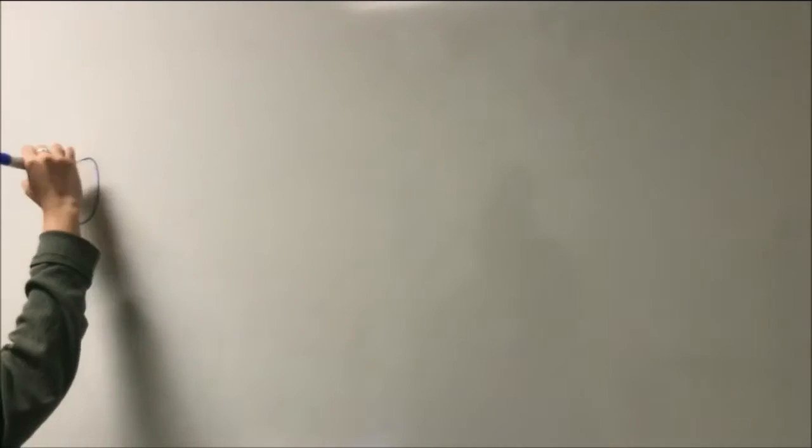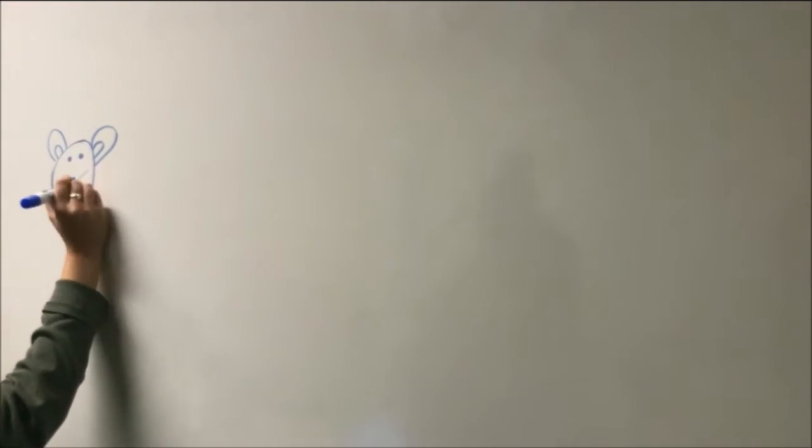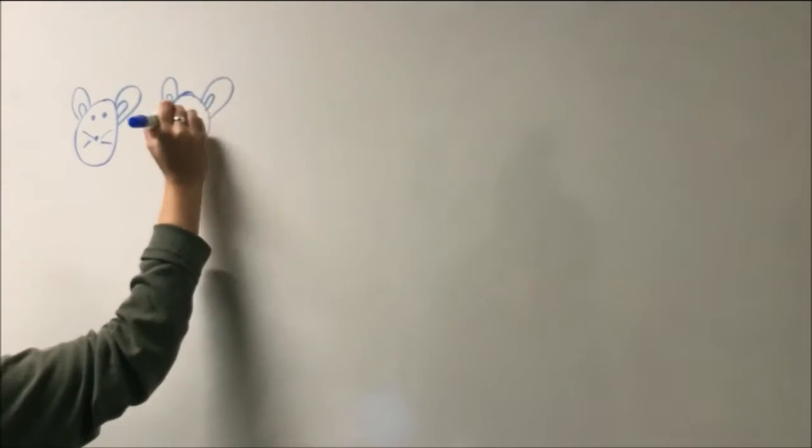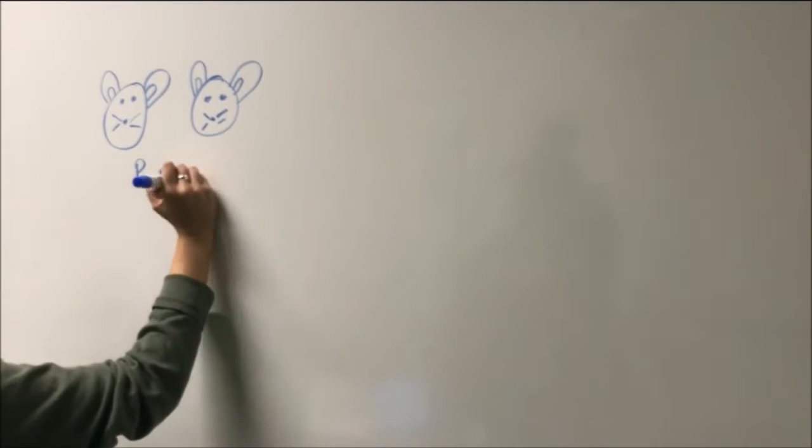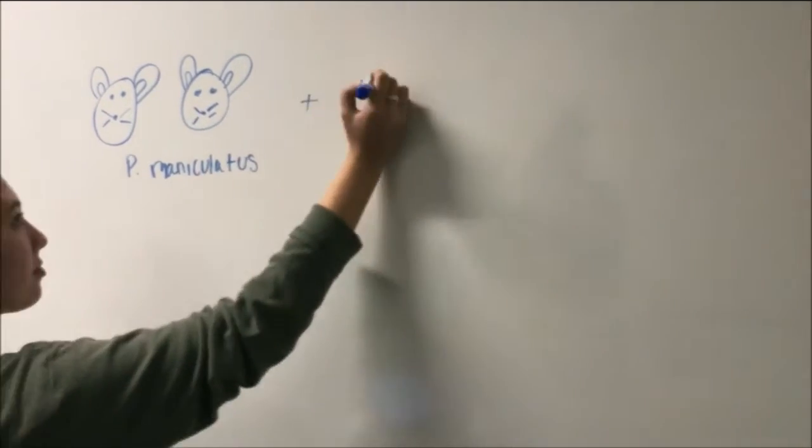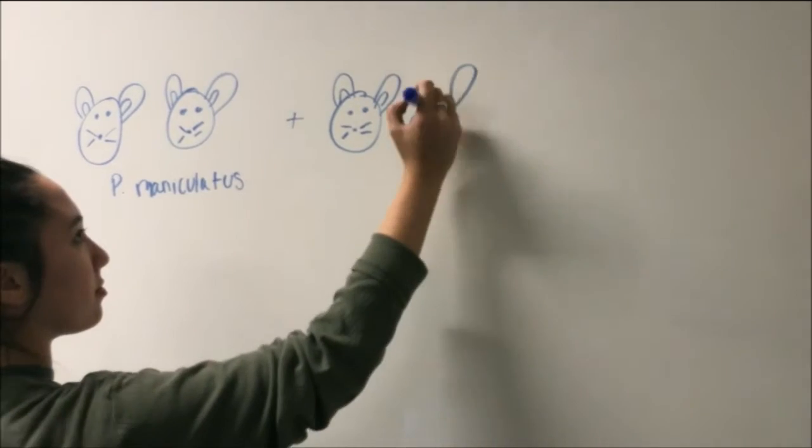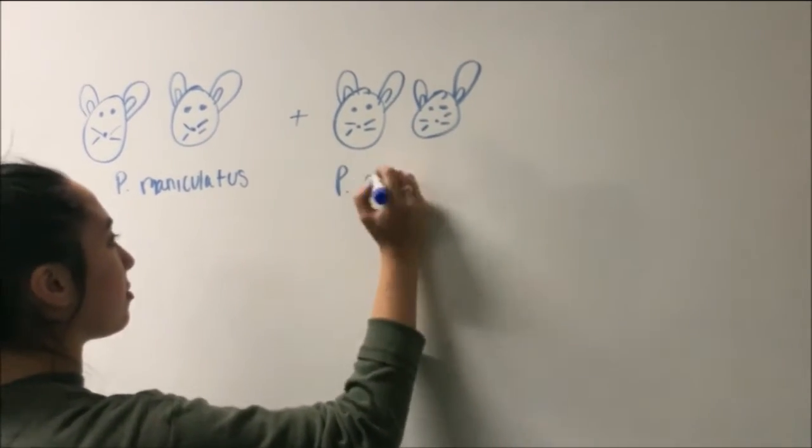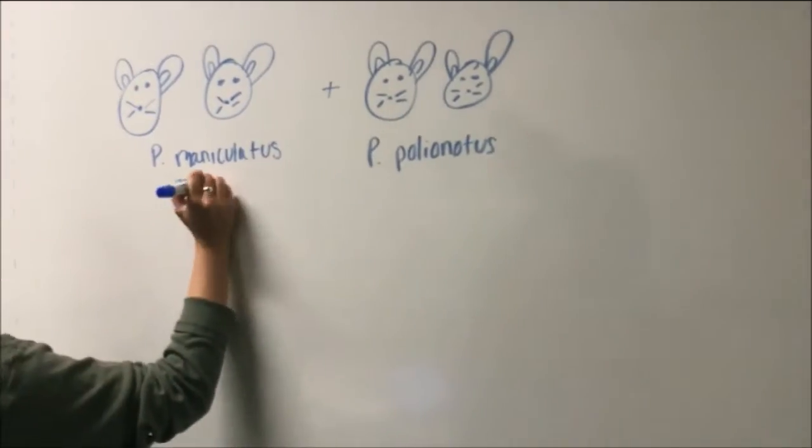The F2 generation of mice whose sperm was to be studied was bred specifically for this experiment. This was done by breeding two polionotus males and two maniculatus females, producing the first generation of progeny. The males and females of the F1 generation were allowed to mate and the resulting F2 generation contained genetic material from both species of mice.